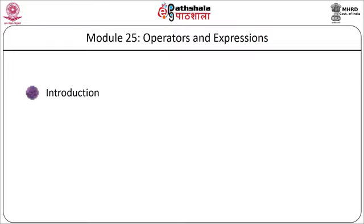The operators in C++ are grouped into three categories: unary operators, binary operators, and ternary operators. A unary operator takes only one operand, a binary operator operates on two operands, and the ternary operator takes three operands. Expressions can be divided into different categories depending upon the type of operands involved, or based on the result obtained after evaluation.